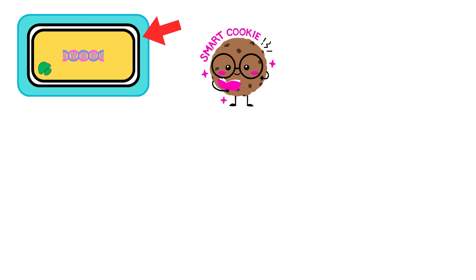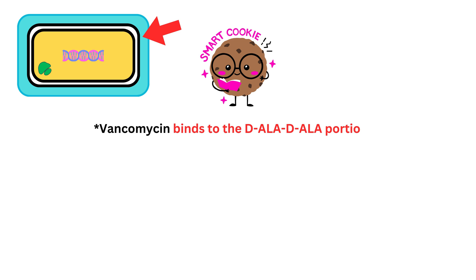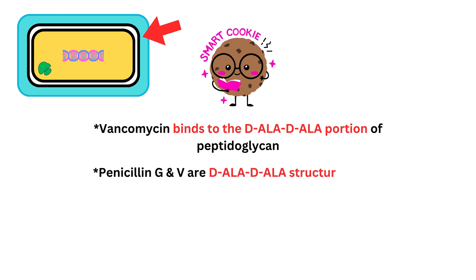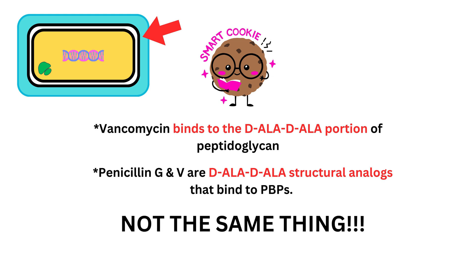It's important to remember that vancomycin binds to the D-alanine-D-alanine portion of peptidoglycan, while penicillin G and V are D-alanine-D-alanine structural analogs that bind to penicillin-binding proteins. They are not the same thing.